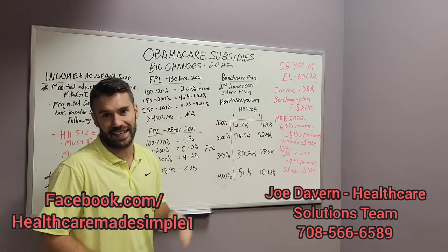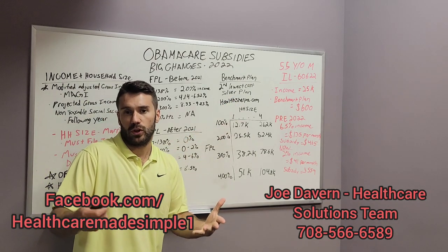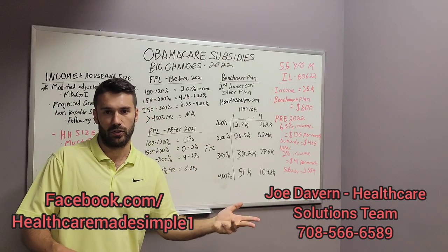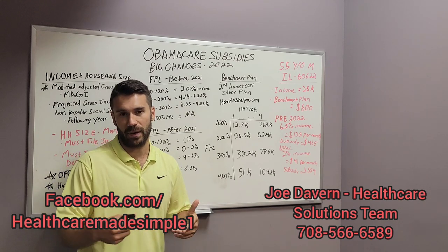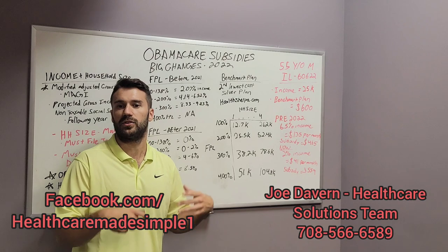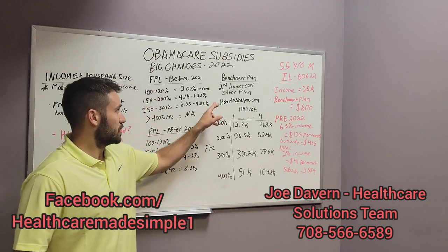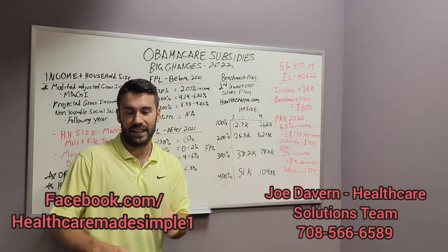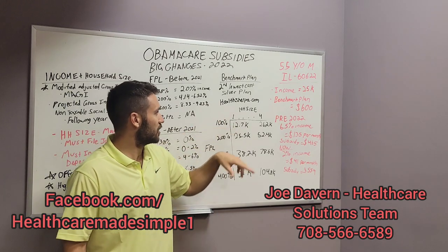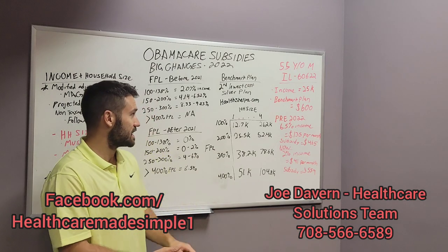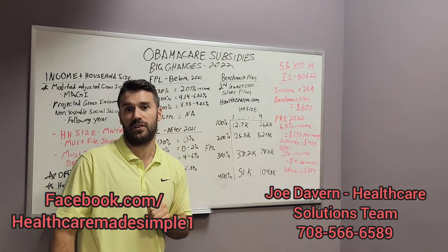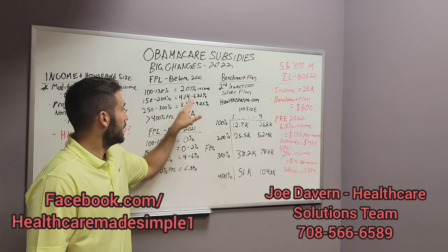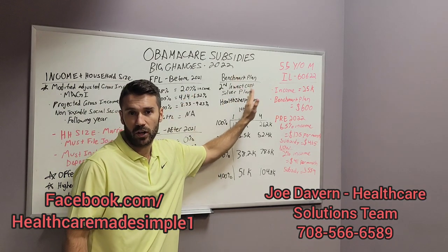The government calls the reference plan the benchmark plan. When you look for health insurance in your county, the government will rate the plans bronze, silver, gold, sometimes platinum. Bronze plans have a very high deductible and not many benefits. Silver plans have more reasonable deductibles and stronger benefits. The government uses the second lowest cost silver level plan in your area to calculate these numbers. There's a website called healthSherpa.com where you can plug in your zip code and family size to look up that benchmark plan.